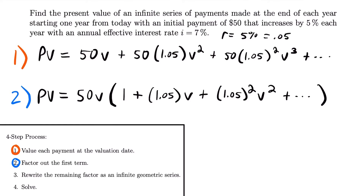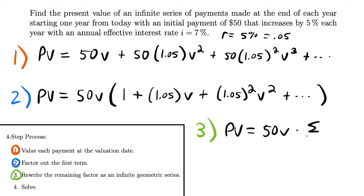Step three is to rewrite the remaining factor as an infinite geometric series. The present value equals 50·v times the sum from k = 0 to infinity of (1.05·v)^k. This infinite geometric series represents that bracketed factor — they are the same thing.